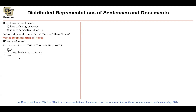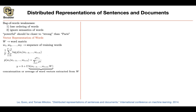For continuous bag of words, you take as input your context of size K — previously called C. Given those context words, you want to predict the word in the middle. The context words W_{t-K} through W_{t+K} are indices; you read off the correct rows from your word matrix to get their vectors.